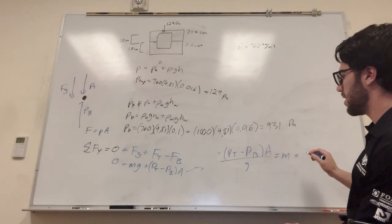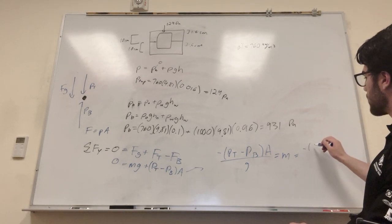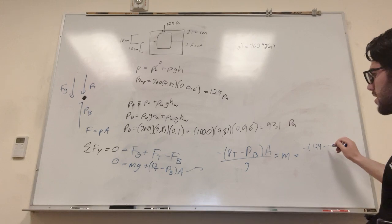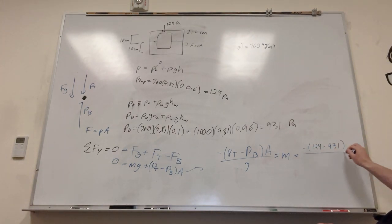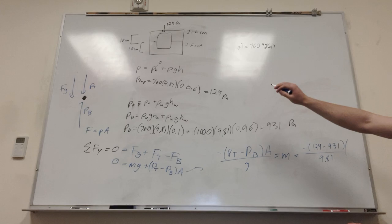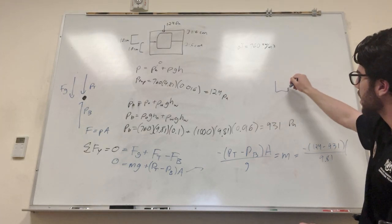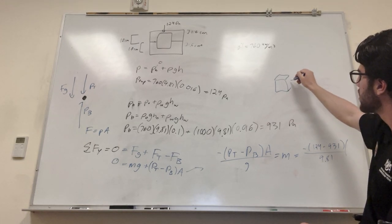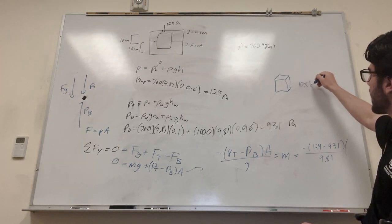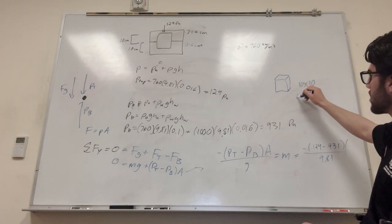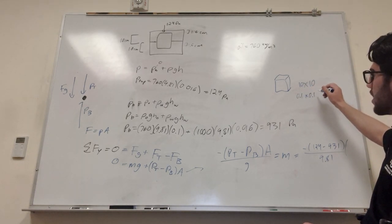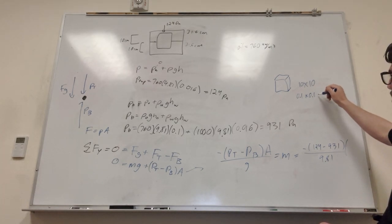So we're trying to solve for mass here. So we can go over here, basically just subtract this from the other side. So this is gonna be negative pressure top minus pressure bottom times the area divided by gravity is equal to mass. And our numbers in this case would be pressure top, which is 124, minus 931, divided by 9.81. And then our area is, so we know that the top of the block is 10 centimeters, right? So kind of imagine a block like this. If it's 10 by 10 centimeters, that's gonna be 0.1 times 0.1. So that's gonna be 0.01.